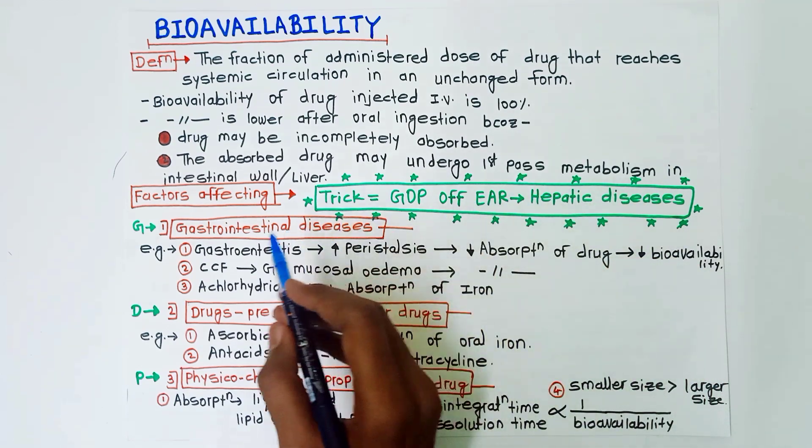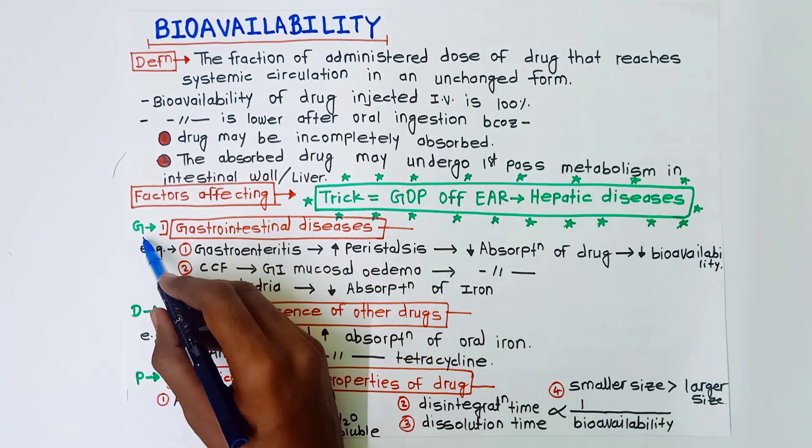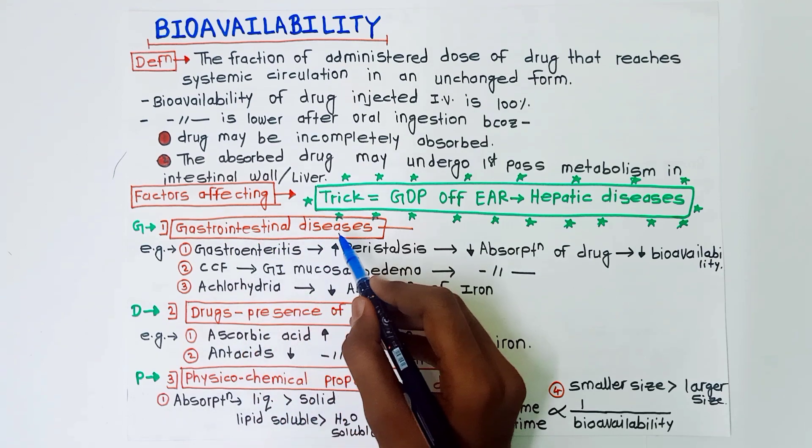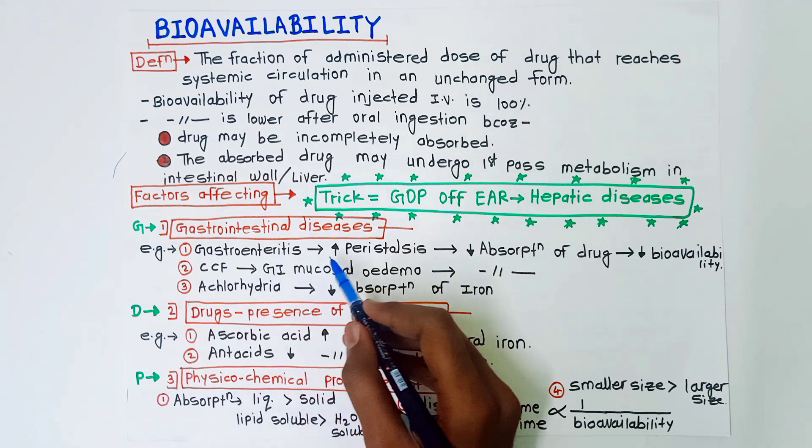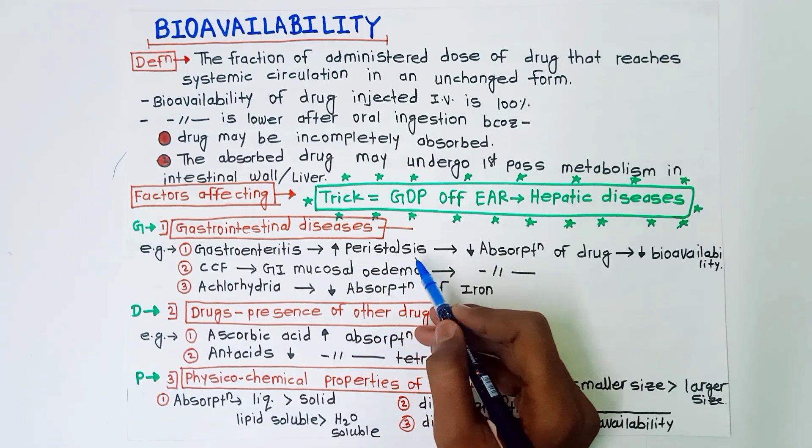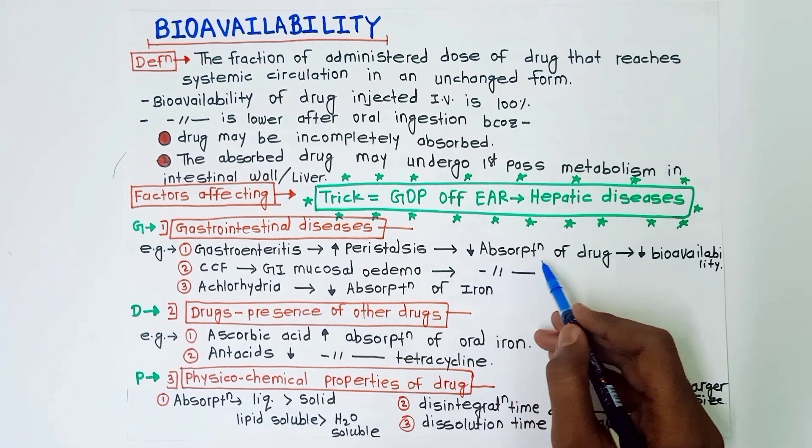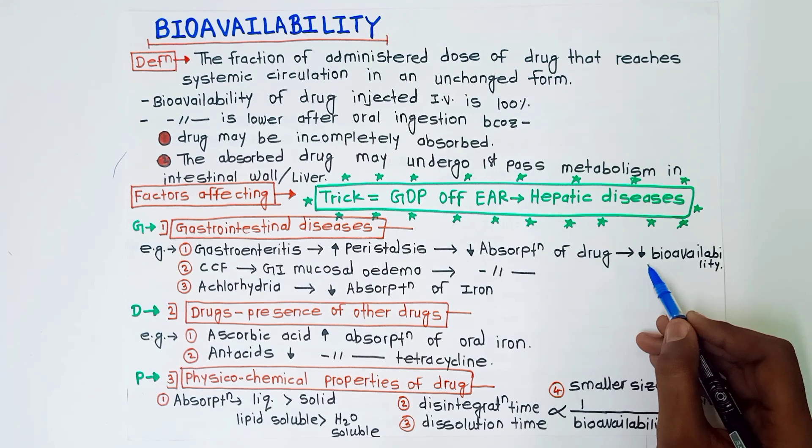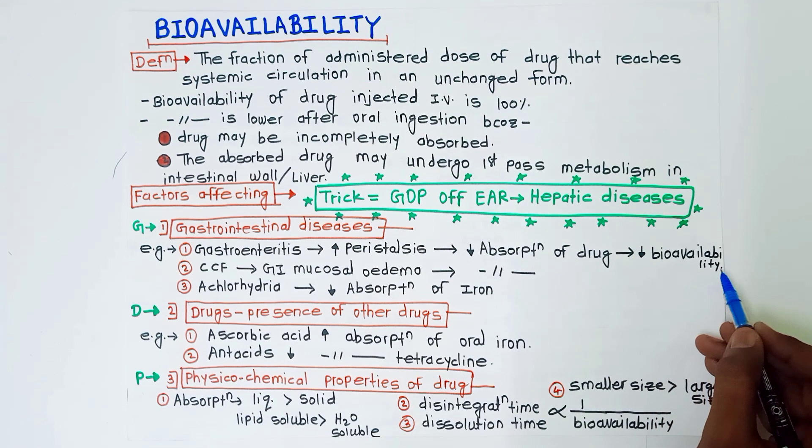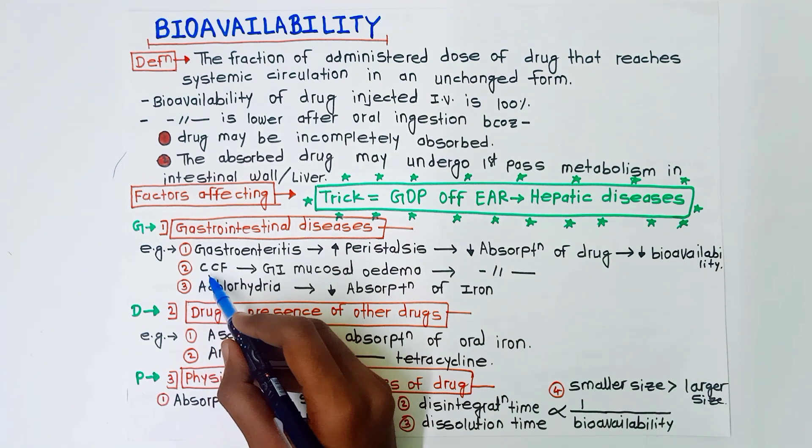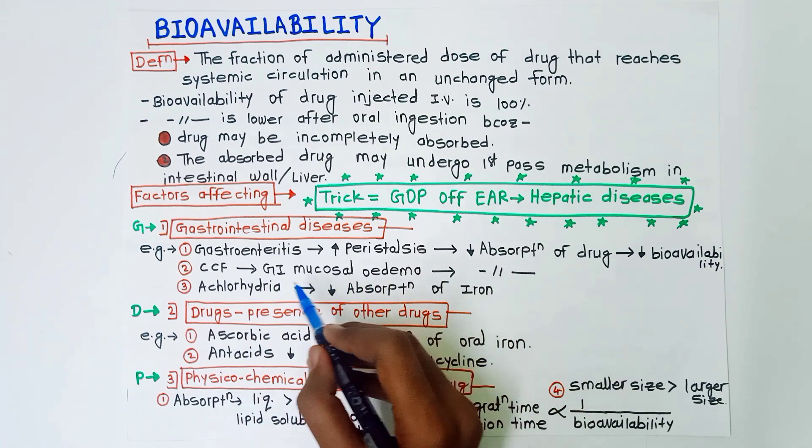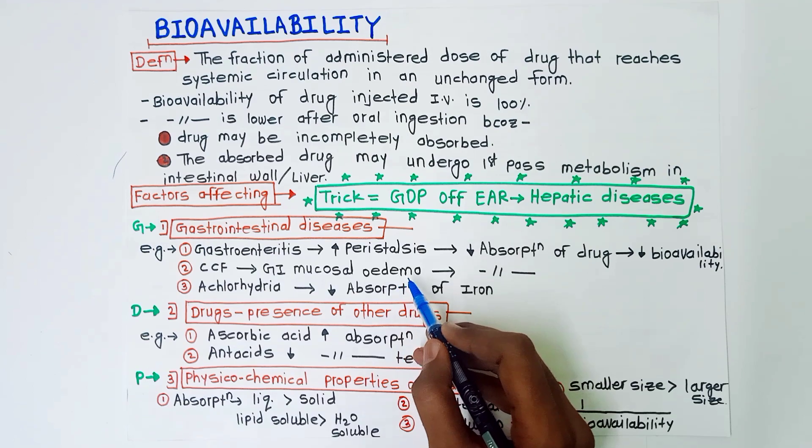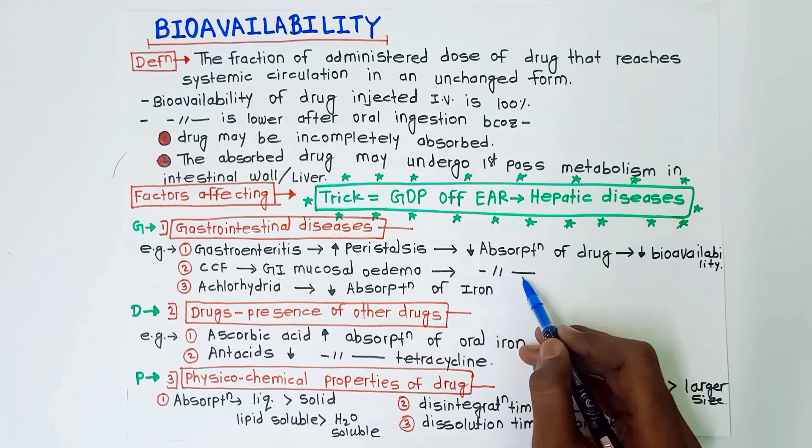Okay, so we will go one by one. First of all, G for gastrointestinal diseases. Example of this is in gastroenteritis there is increased peristalsis which decreases absorption of drug which leads to decreased bioavailability. In congestive cardiac failure, the GI mucosal edema is there, that is gastrointestinal mucosal edema, which leads to decreased absorption of drug. In achlorhydria there is decreased absorption of iron.